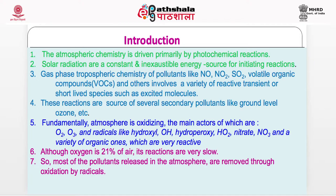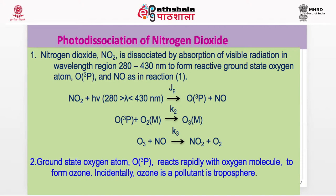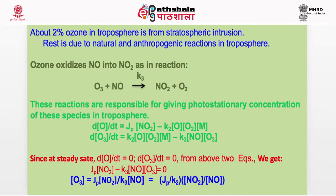How are the radicals formed? We can discuss the chemistry by photodissociation of NO2. Radiation of this wavelength dissociates NO2 to give ground-state oxygen atom O(3P) plus NO. This atom reacts with O2 in the presence of a third body to produce ozone. Ozone then oxidizes NO to give NO2 and O2. So this is a cyclic reaction — NO2 was used up and NO2 has been reproduced, and ozone has been formed. Incidentally, ozone is a pollutant in the troposphere, and about 20% of tropospheric ozone comes from stratospheric intrusion.